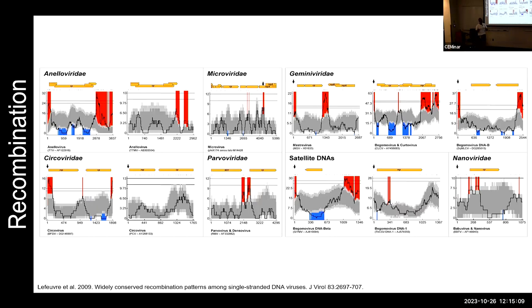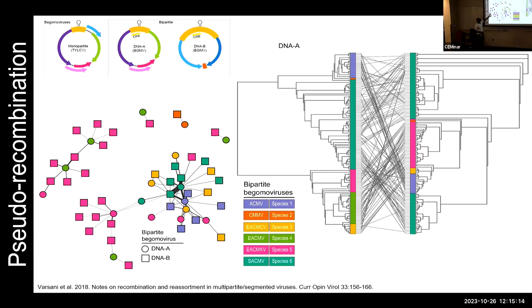Bipartite viruses have two molecules — two chromosomes packaged into two separate capsids — both required for infection, and co-transmitted by vectors. When we examine the phylogeny of the two different molecules, we see no congruence, telling us these secondary molecules are accessories that can be traded as needed. This is a huge evolutionary advantage for segmented viruses compared to non-segmented ones with all genomic components fixed on one nucleic acid molecule.